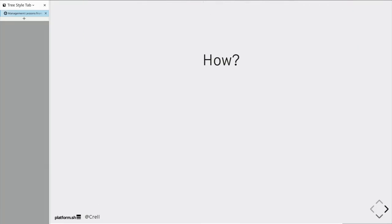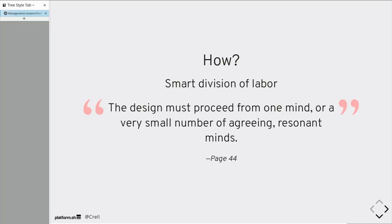So how do you have that good conceptual integrity? Through smart division of labor. In fact, Brooks argues, the design must proceed from one mind or a very small number of agreeing, resonant minds. This is not monothink, but it's not conflict-think. If you have different overlapping opinions of how software should work, of what the program should do, sitting in the same code base, you have a mess. We've all worked on those systems, I'm sure.